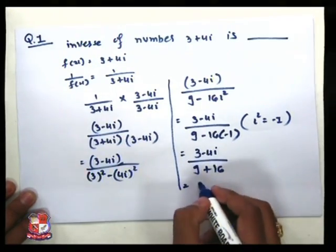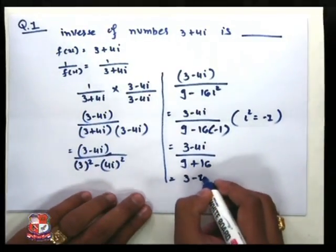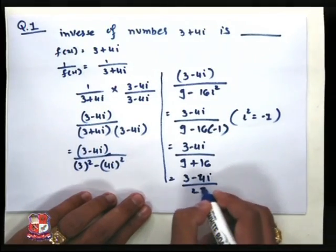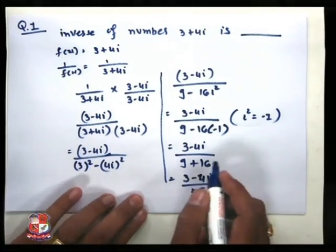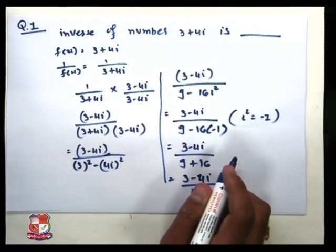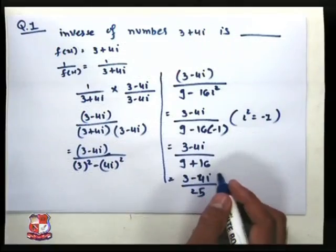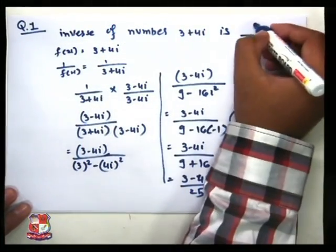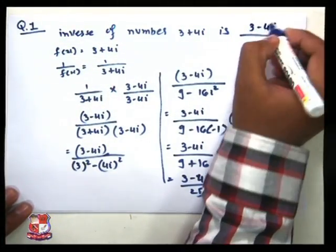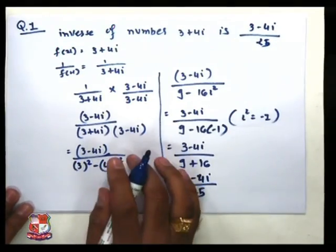Now, again simplify: 3 minus 4i divided by 25. So this is our answer — that is option B — 3 minus 4i divided by 25. So your final answer is 3 minus 4i divided by 25.